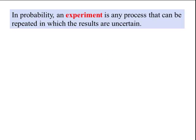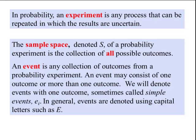In a probability experiment, a process can be repeated in which the results are uncertain. The sample space, denoted by S, is the collection of all possible outcomes. An event is any collection of outcomes from a probability experiment; it may consist of one outcome or more than one outcome. Events with one outcome, sometimes called simple events, are denoted with a lowercase e. In general, events are denoted by capital letters such as E.